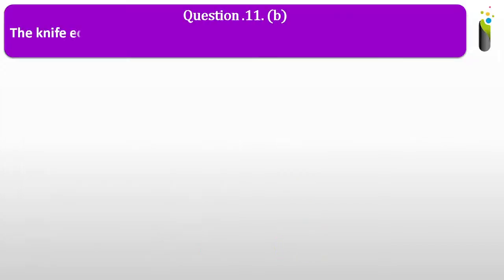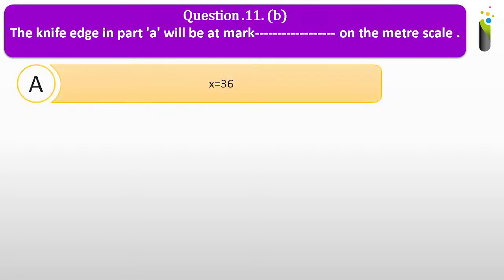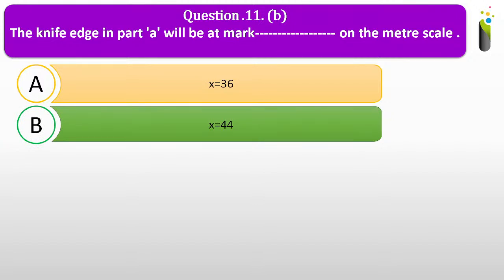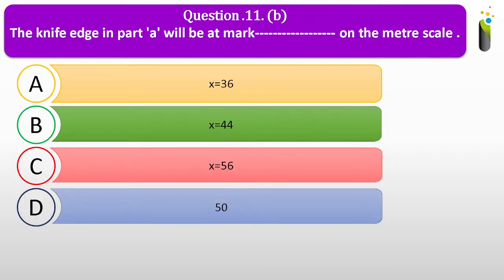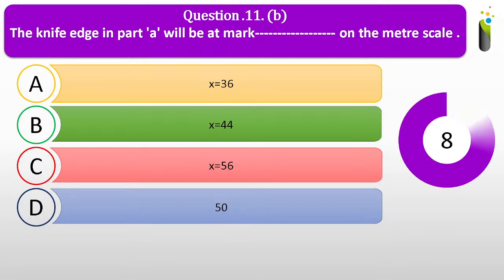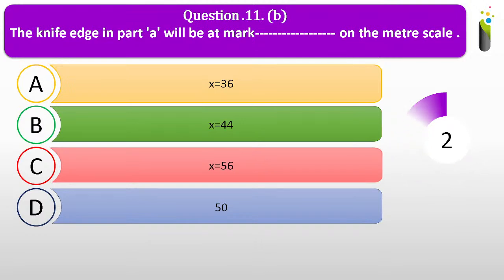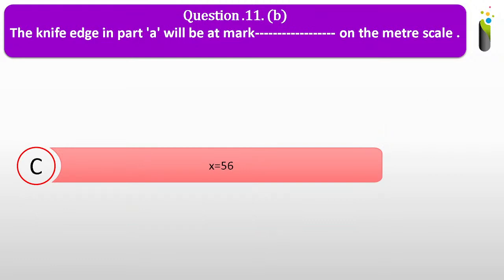Coming to question number eleven B. The knife edge in part A will be at mark dash on the meter scale. Options: A, x = 36; B, x = 44; C, x = 56; D, x = 50. The correct answer is x = 56 on the meter scale.